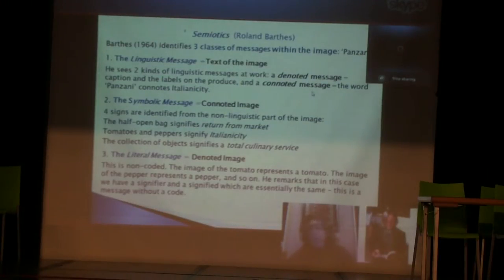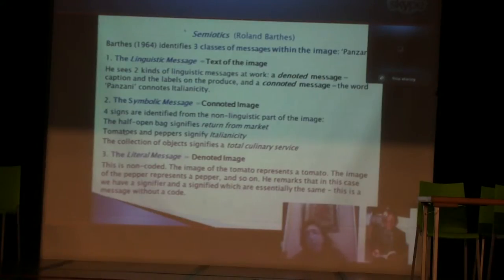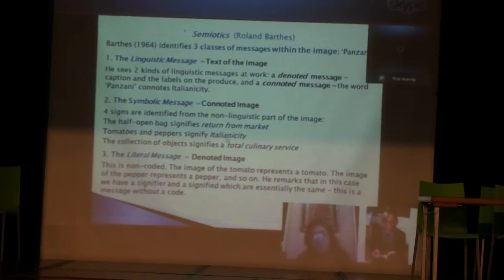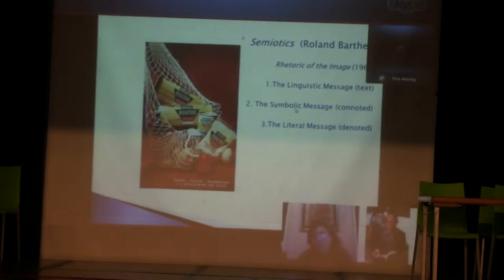Then he sees another reading in the symbolic message — it's the connoted image. He sees four signs which are non-linguistic. He talks about the half-open bag, which signifies a return from market. Tomatoes and peppers signify Italicity, and the collection of objects signifies a total culinary service.